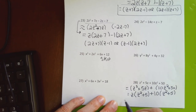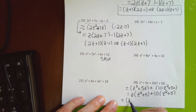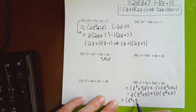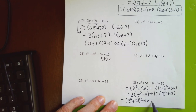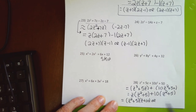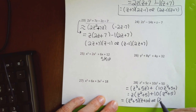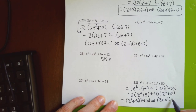In the second parenthesis the biggest number that divides into both 10 and 50 is 10. I put 10 in front, divide 10 by 10 to get 1 and leave z², keep the plus sign, and 50 ÷ 10 = 5. The answer is (z² + 5)(z + 10) or (z + 10)(z² + 5).